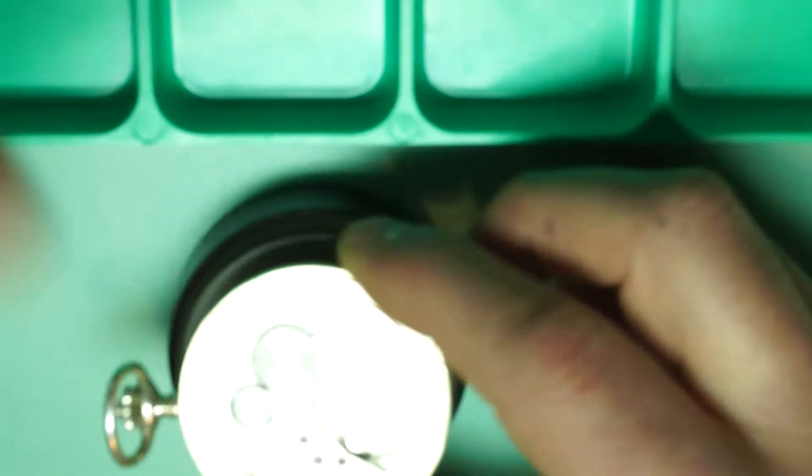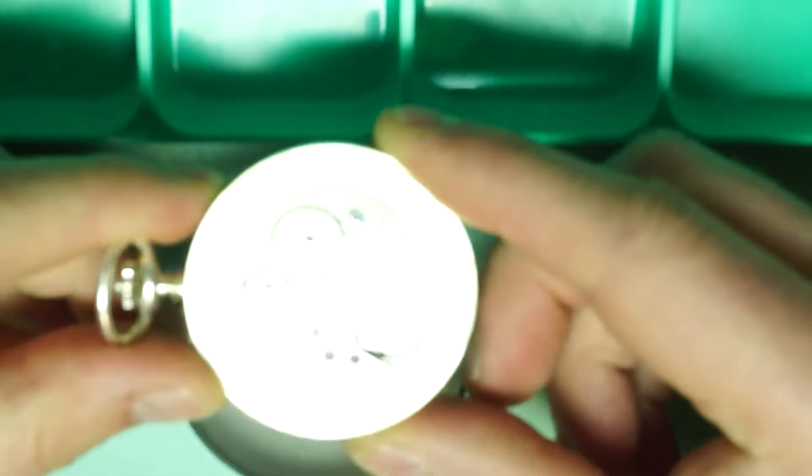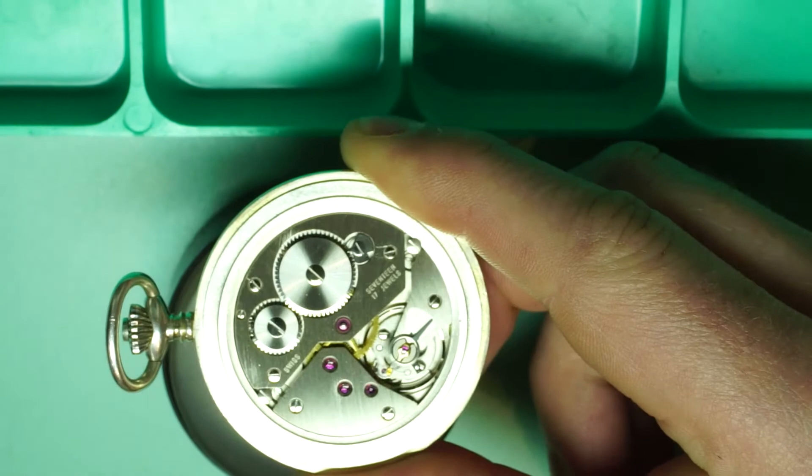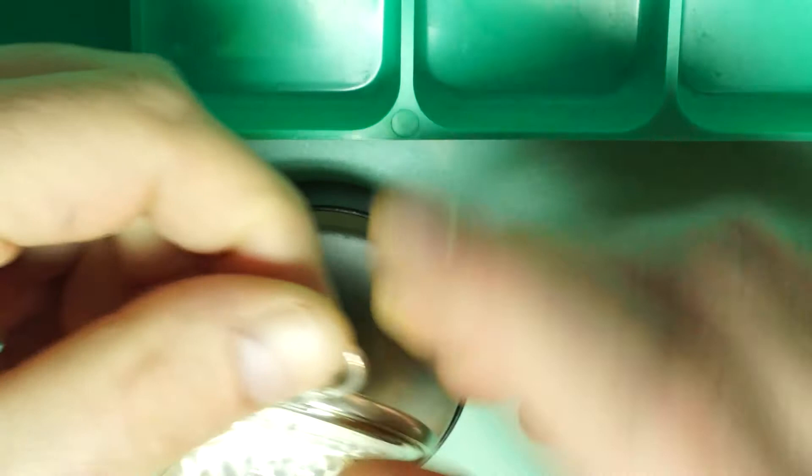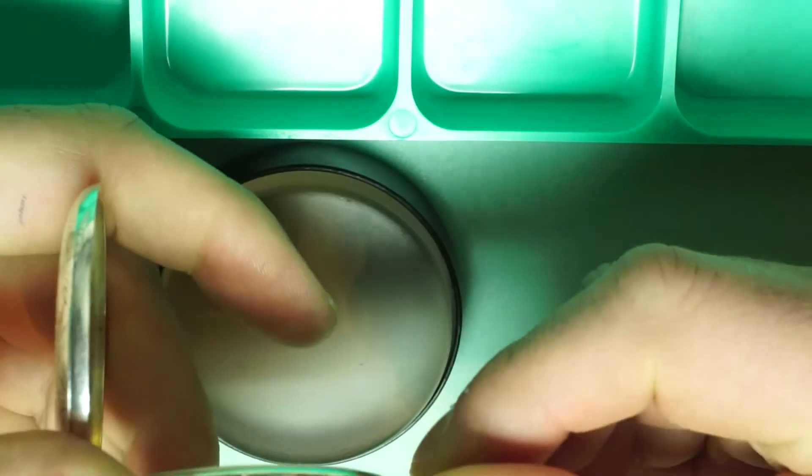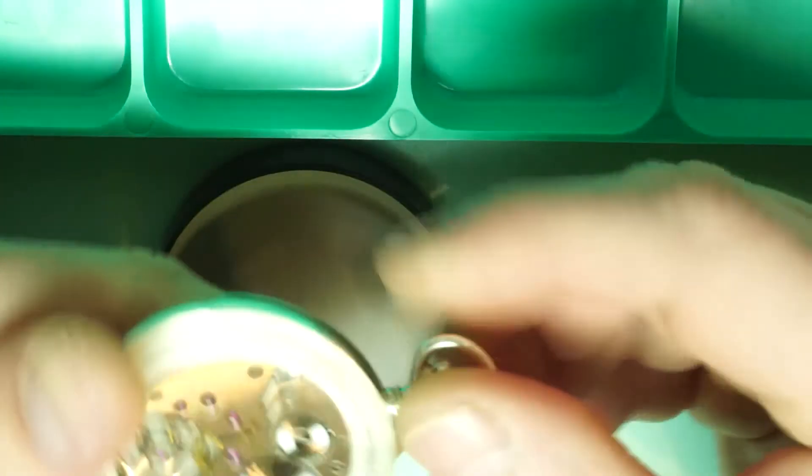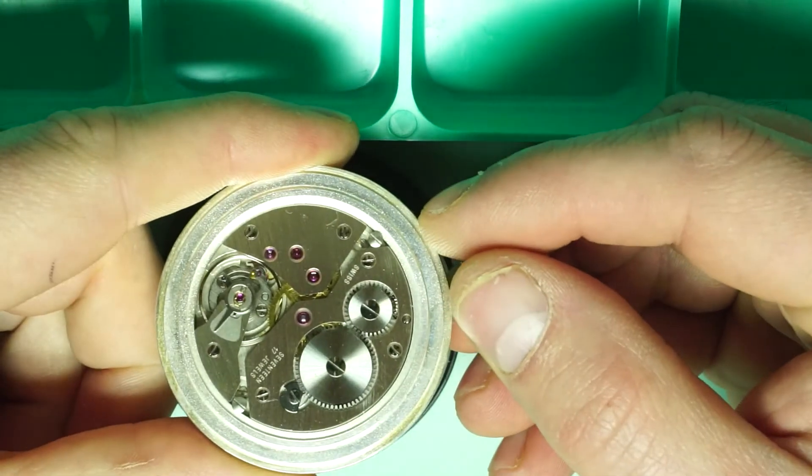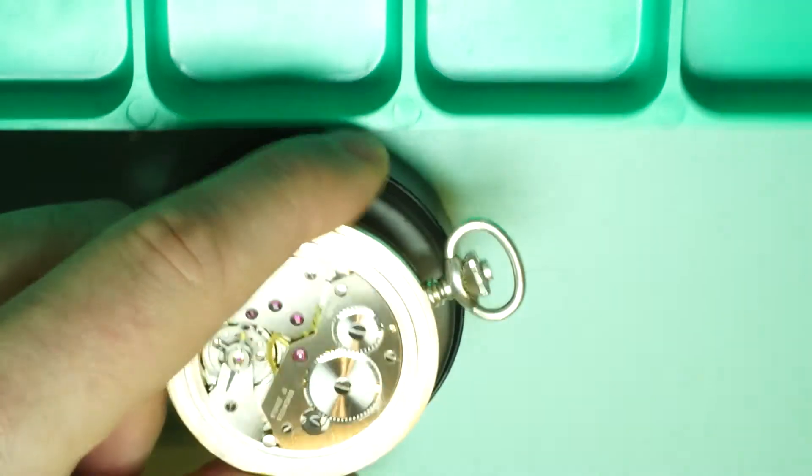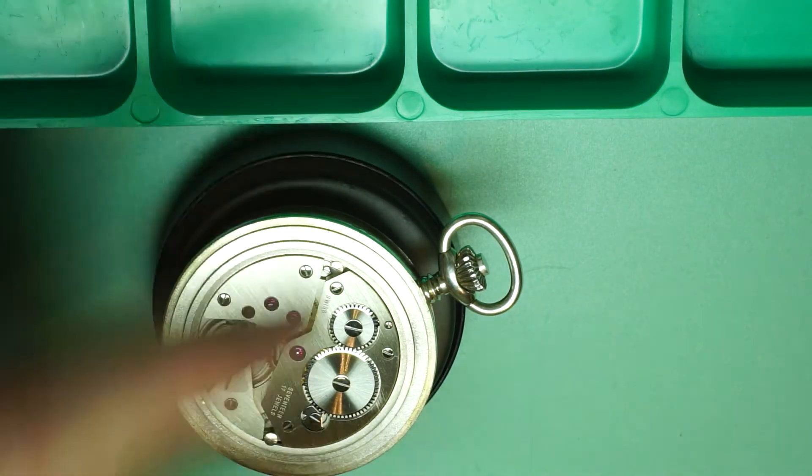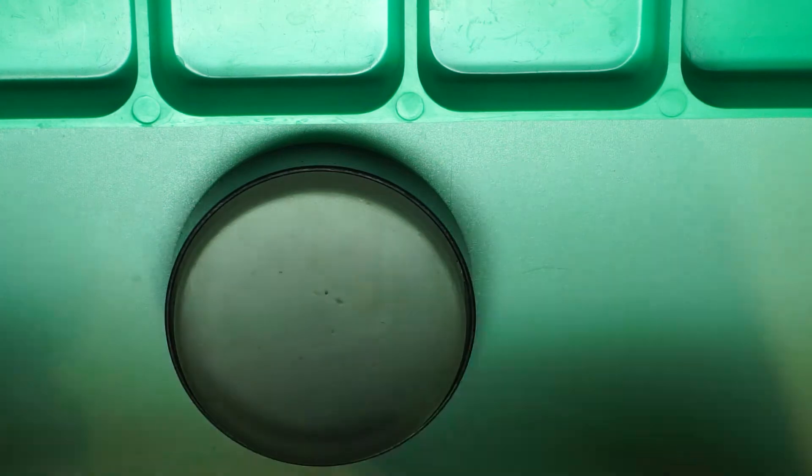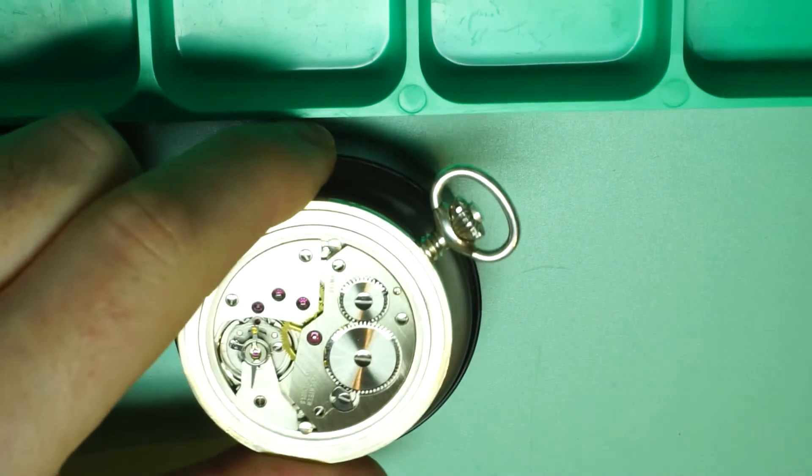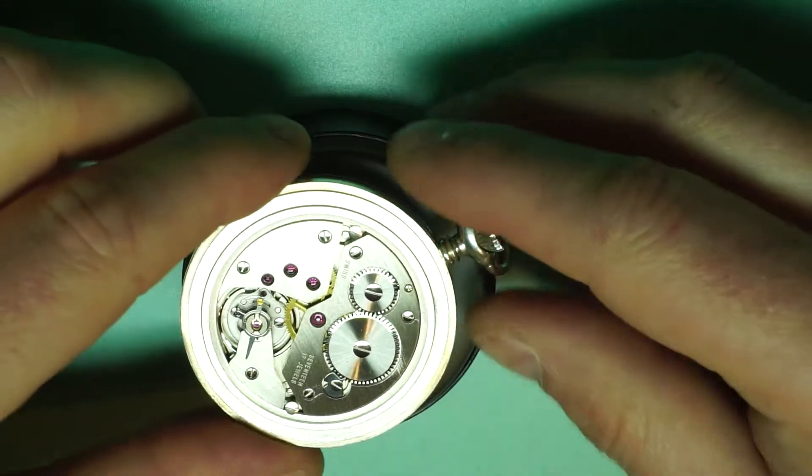So if we zoom in again, we can see that we have a 6498 movement. So this will be either ETA or UNITUS, it's probably an ETA. Let's have a quick look using the loupe. So this is a 6498-1 from ETA, a fairly common movement and a good one to start with.